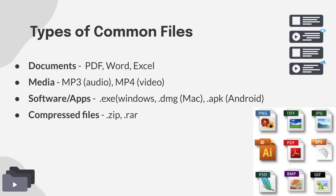Media downloads include audio like MP3s or songs, MP4s for videos, or .mov files. We also have software and apps, which is probably the most common thing you might be downloading. These usually end with extensions like .exe if you're on Windows, .dmg if you're on Mac, or .apk if you're on Android.